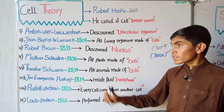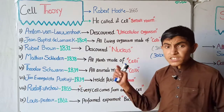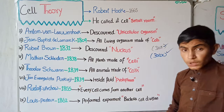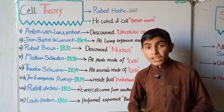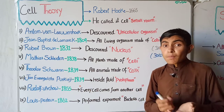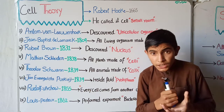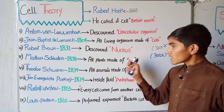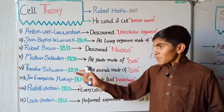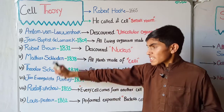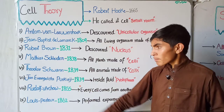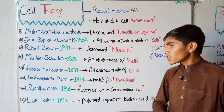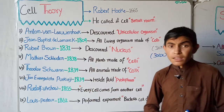It was Robert Brown in 1831, an English scientist, who discovered the nucleus. He said that the nucleus is a central sheltered part of the cell.